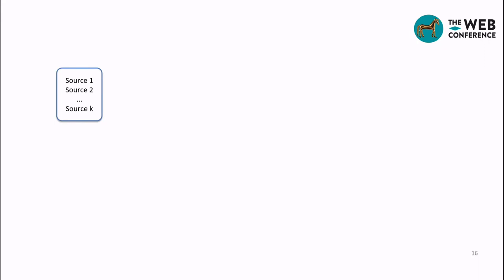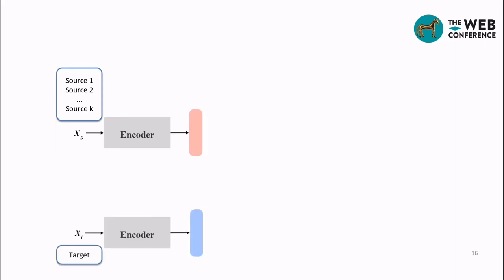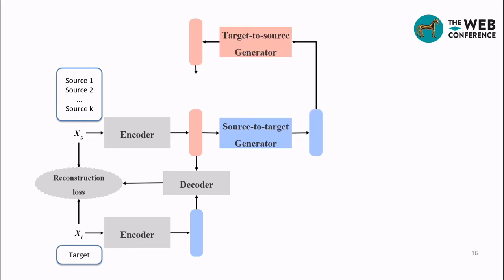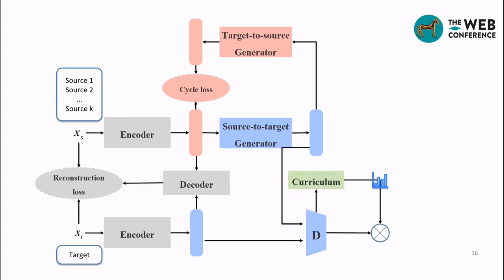First, we encode textual samples into representation space using an encoder-decoder structure to obtain a reconstruction loss. We then use generators to generate intermediate domain samples with C-Cycle loss and GAN loss. Specifically, the GAN loss is averaged with sample weights computed by our curriculum source selection model. Finally, we train a sentiment classifier on the intermediate domain.